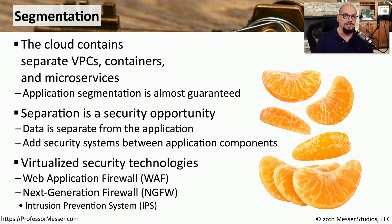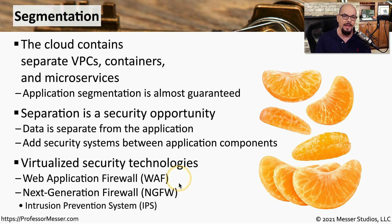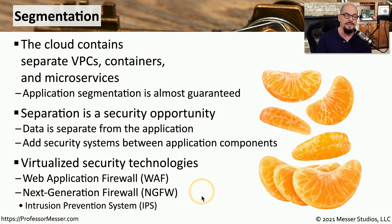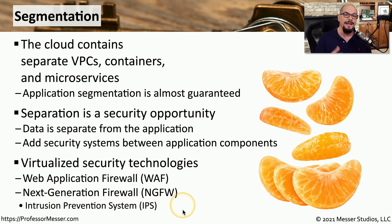We might also want to supplement this segmentation with additional security controls. For example, we might have a web application firewall, or WAF, which examines all inbound and outbound communication for that application and ensures there's no malicious data going into or out of your application instance. If you want to segment the network even further, you might use a next-generation firewall, which allows you to set different subnets and route between them, all in a virtual environment. Many next-generation firewalls also include intrusion prevention, so they can identify known malicious code traversing your network.